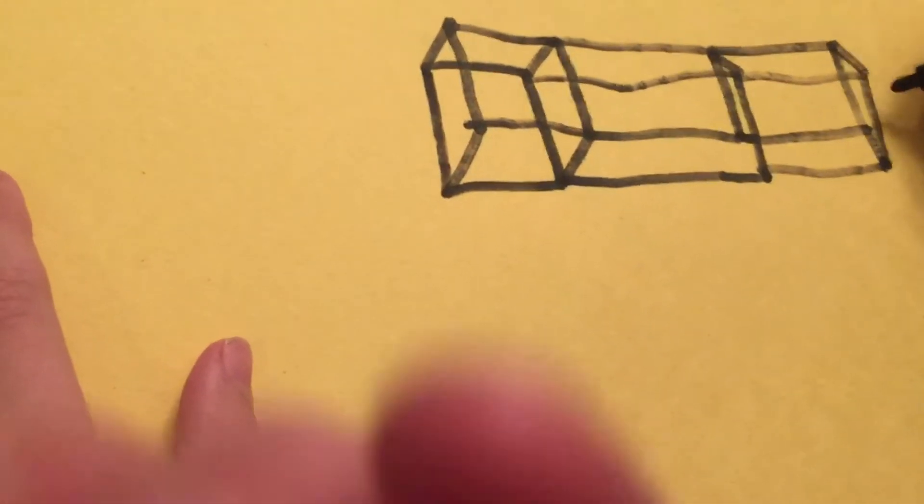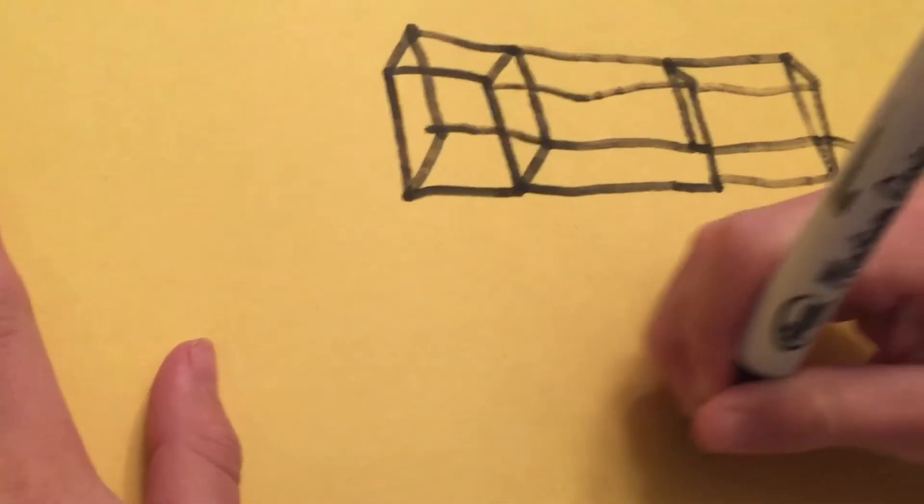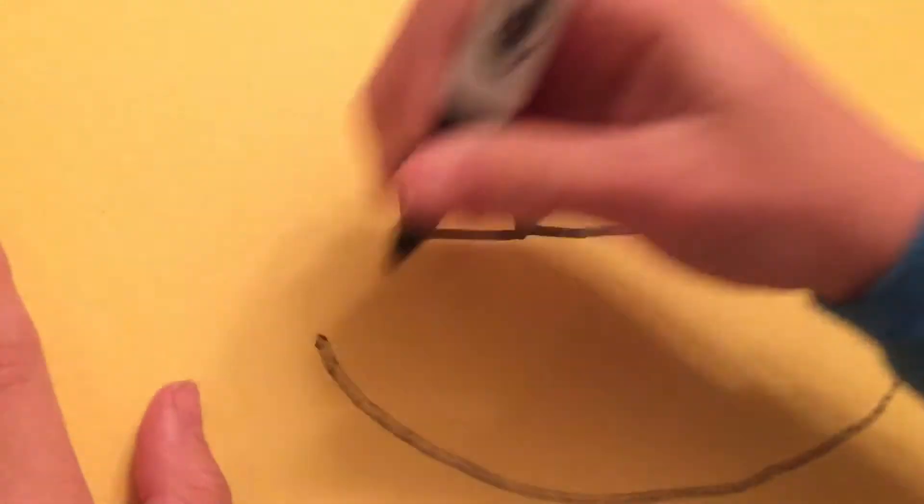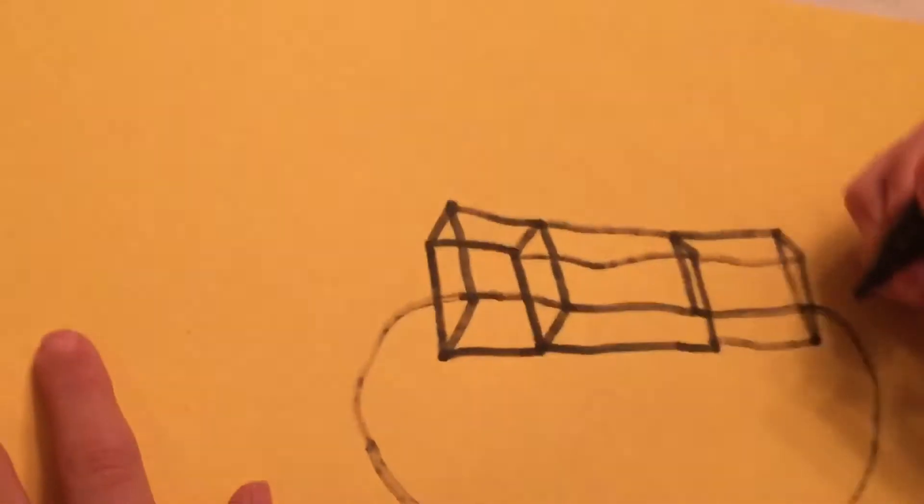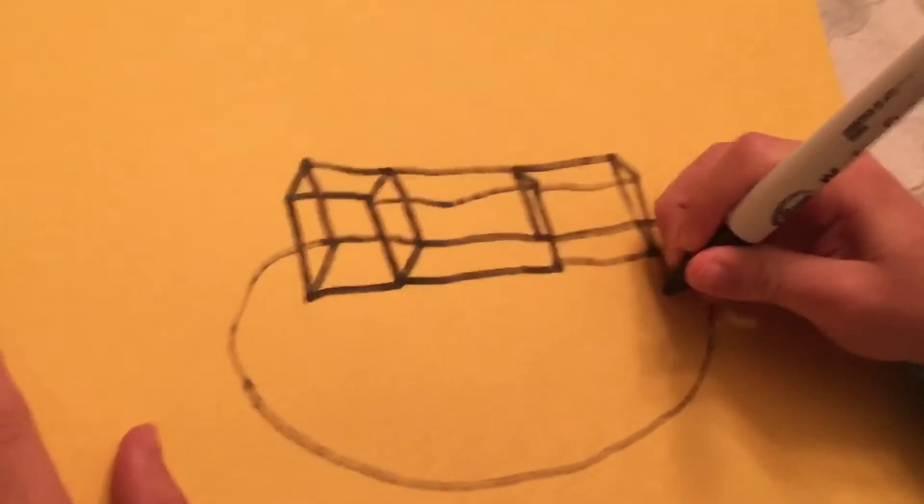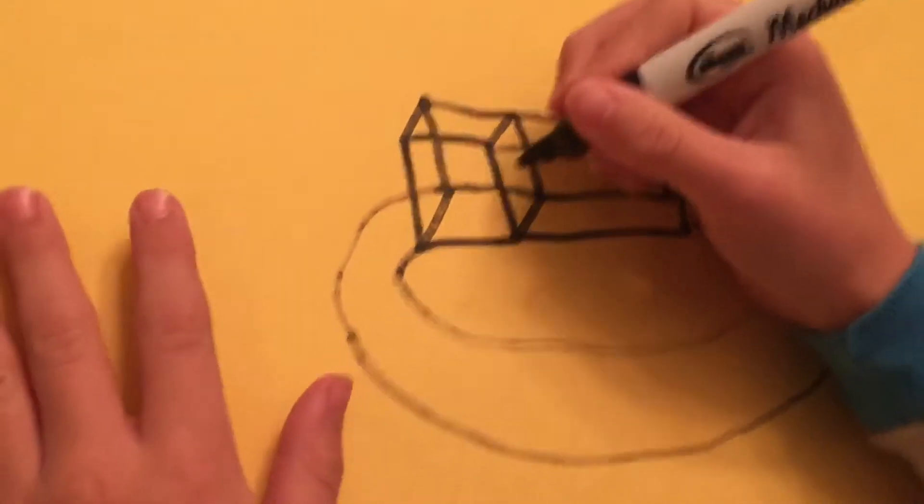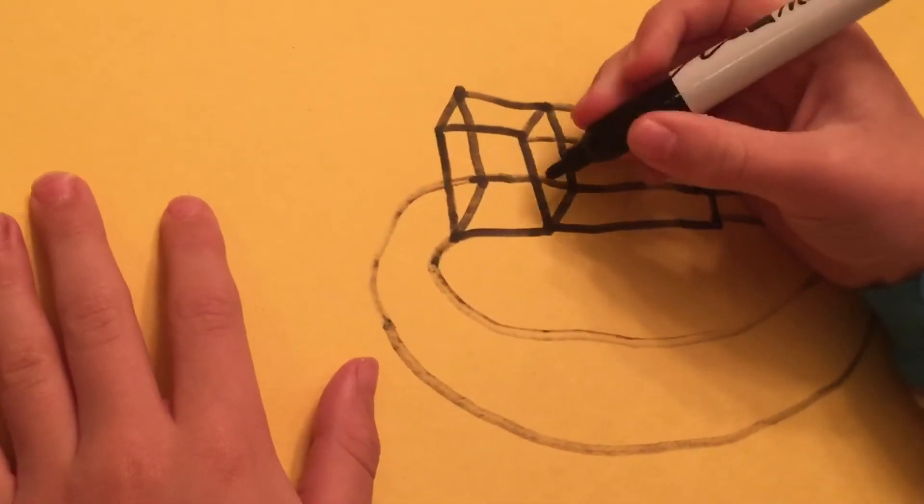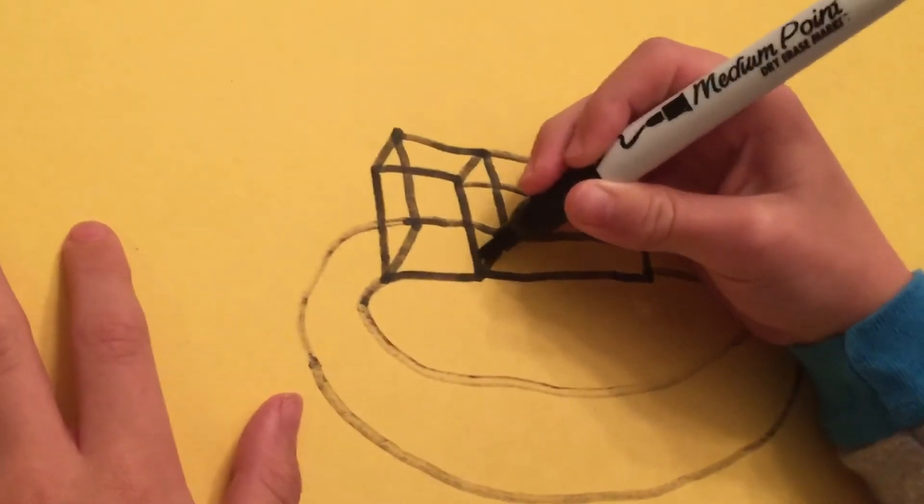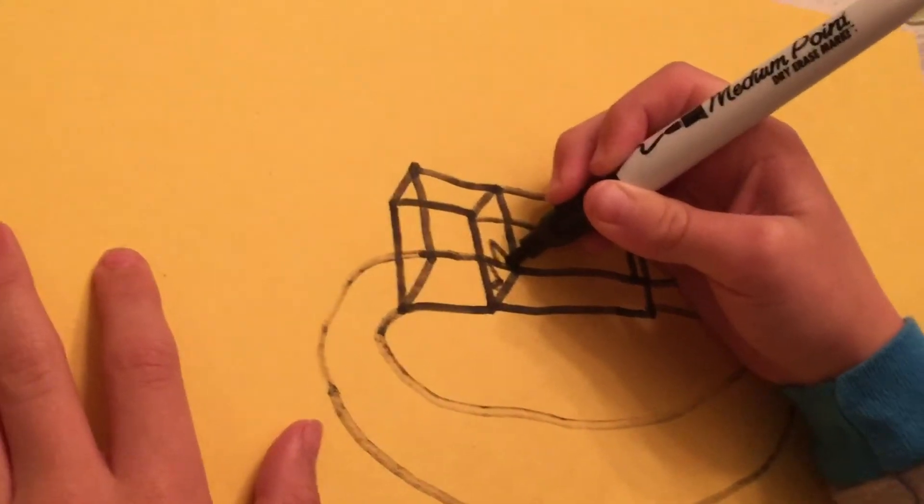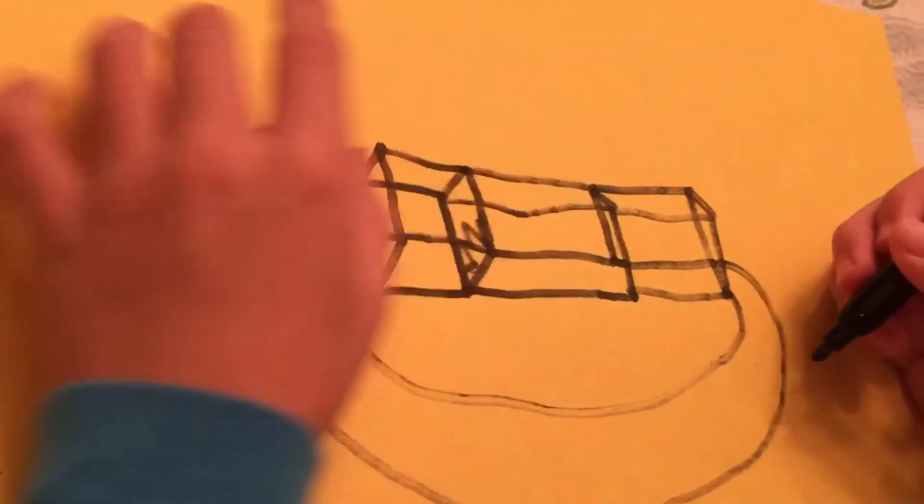Then we continue the path like that. And then from here, make a little circle. And now you should be making decorations. This is a hole in the glass, so then the cart will go through it.